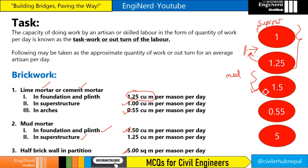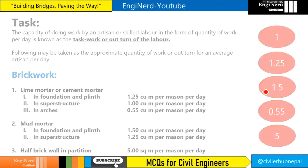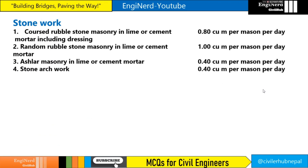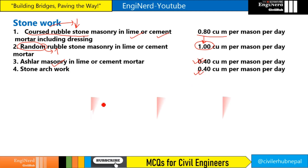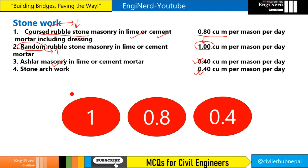For stonework: coarse rubble stone masonry in lime or cement mortar is 0.8 cubic meter per mason per day. For random rubble masonry it is more — that is 1.0. For ashlar masonry it is less at 0.4, and stone arch work is also 0.4. So: random is 1.0, coarse is 0.8, and ashlar masonry and stone arch work are both 0.4.